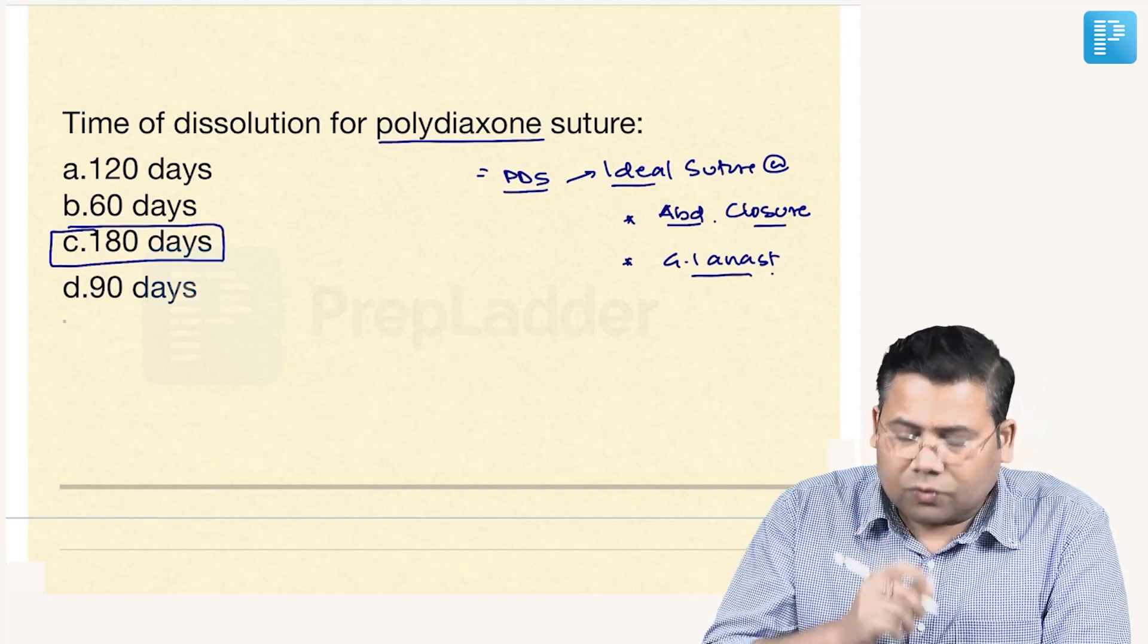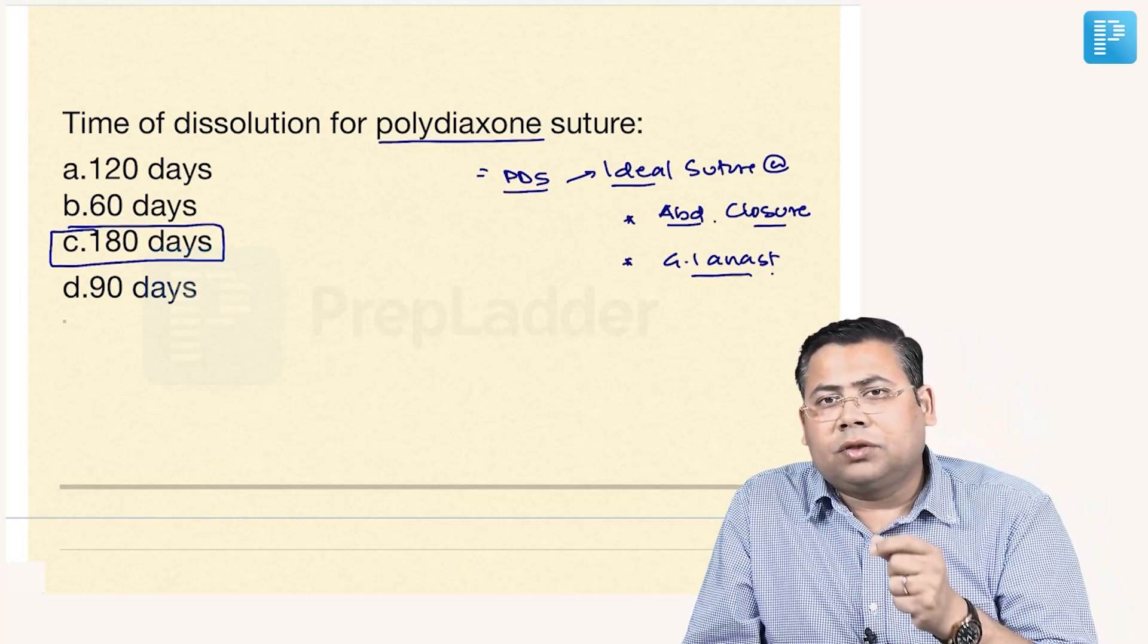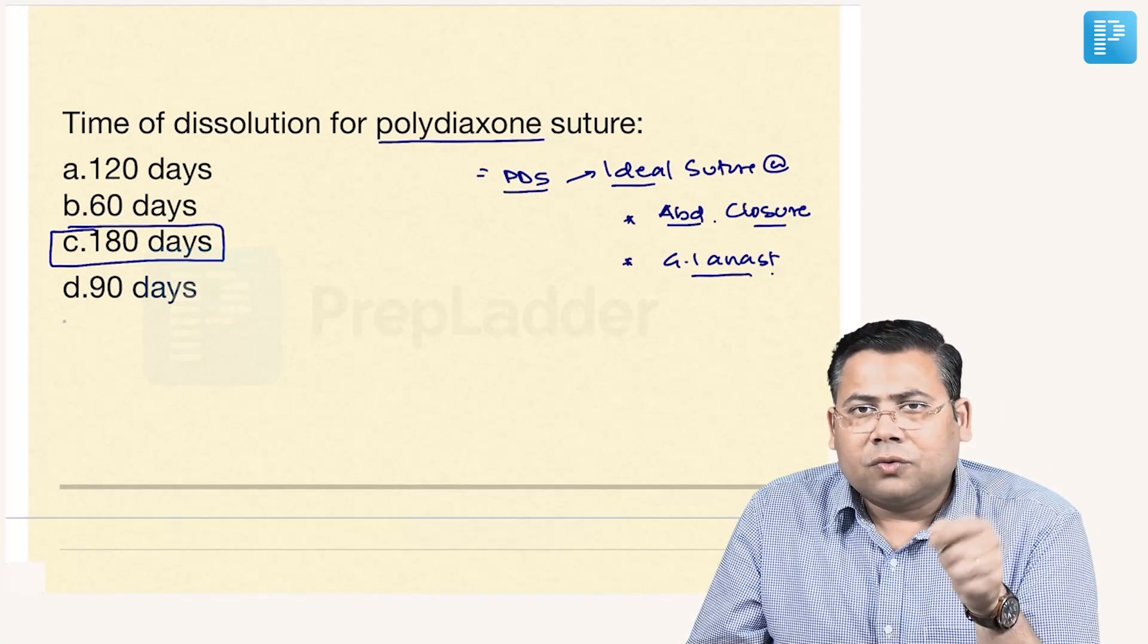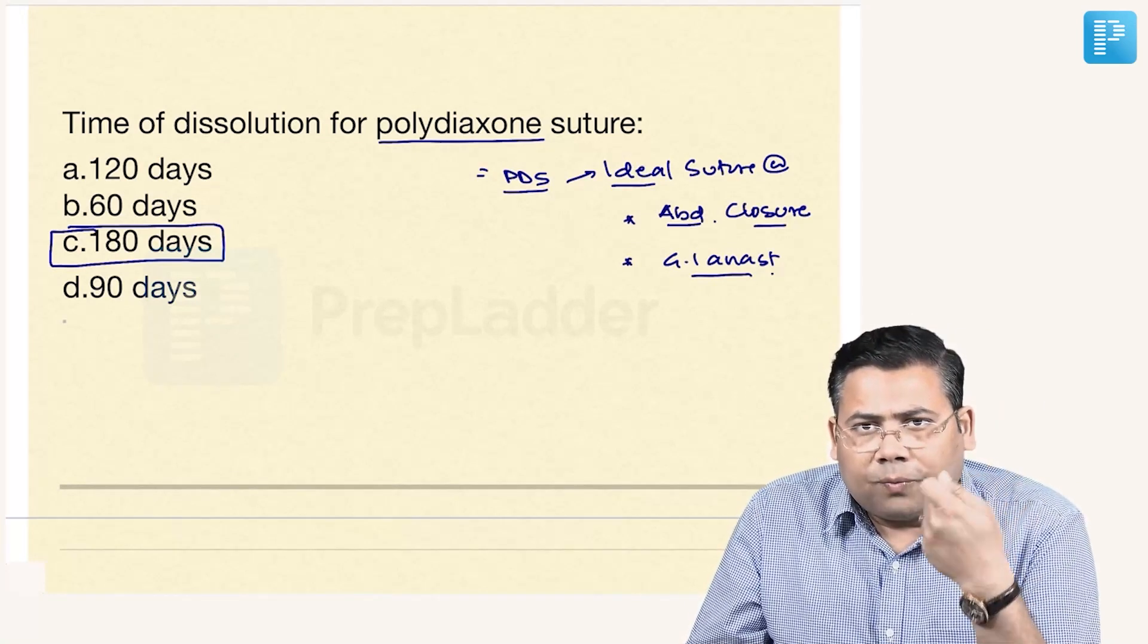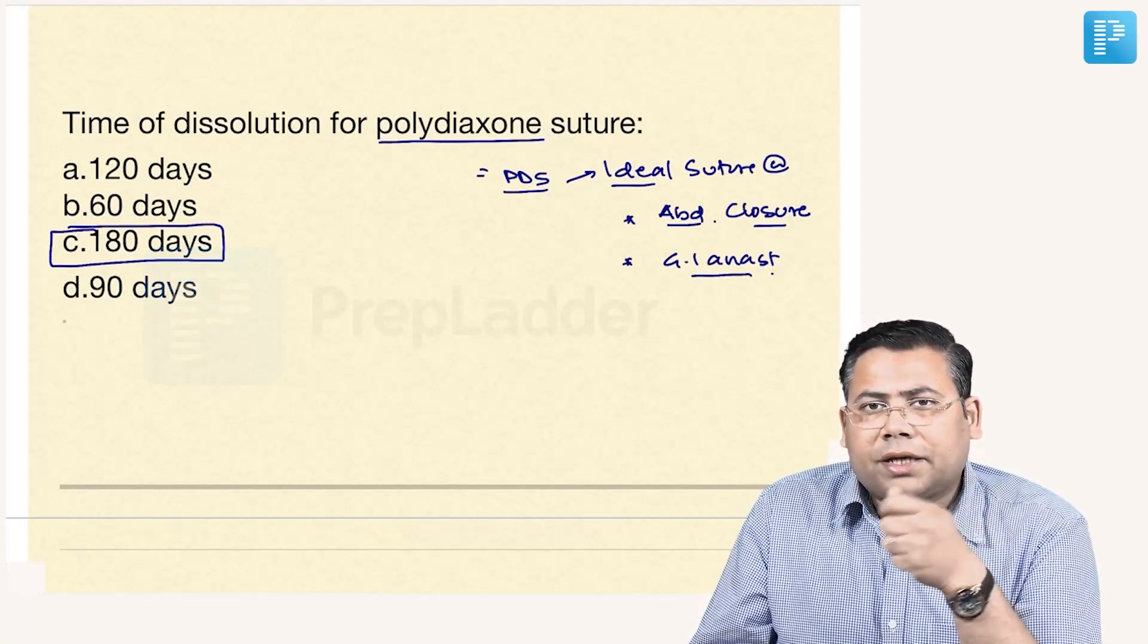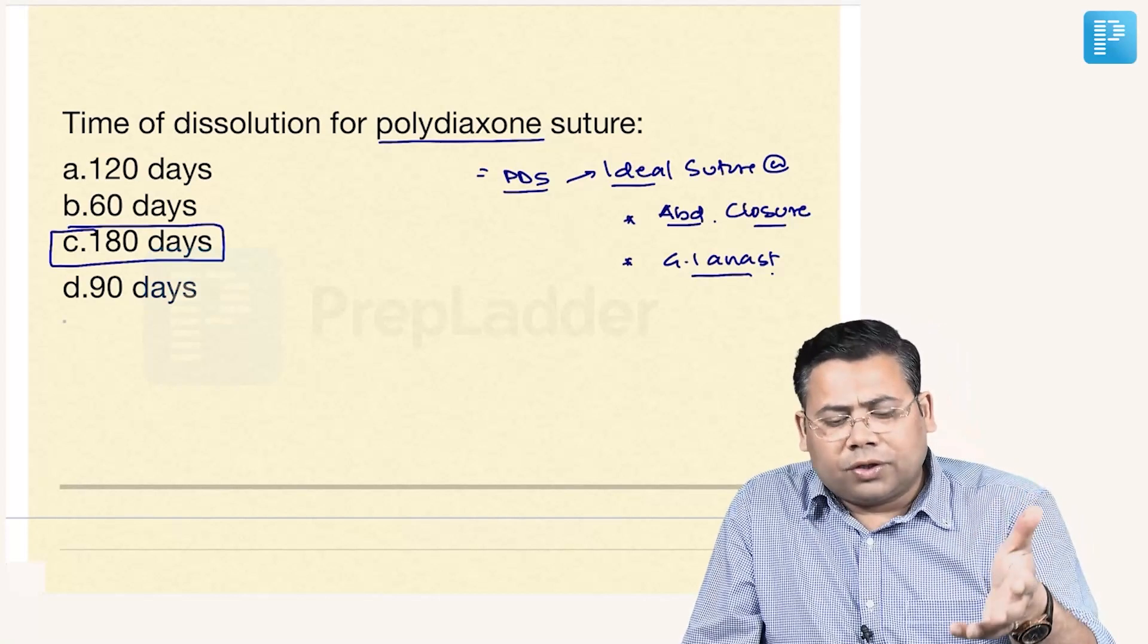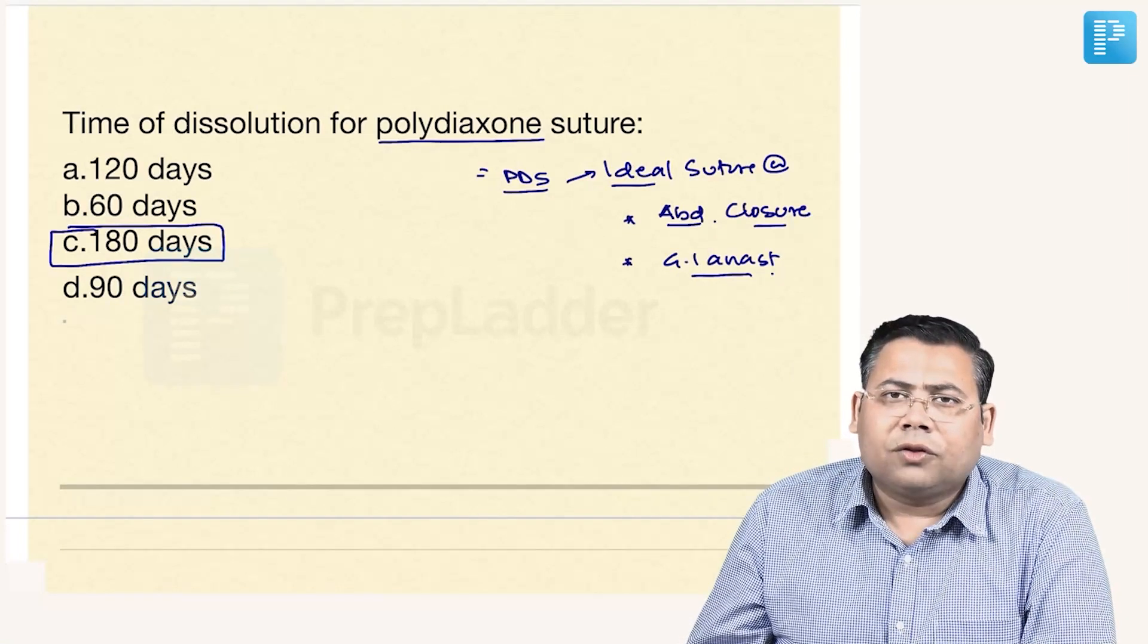The advantage of using PDS over Vicryl is that it is a smooth monofilament suture. It is not braided like Vicryl so you don't need lubrication or jelly to pass through, lesser tissue damage, and it can be easily glided. Majority of the laparoscopic surgeons in laparoscopic surgery, robotic surgery, we are using PDS only for the anastomosis.